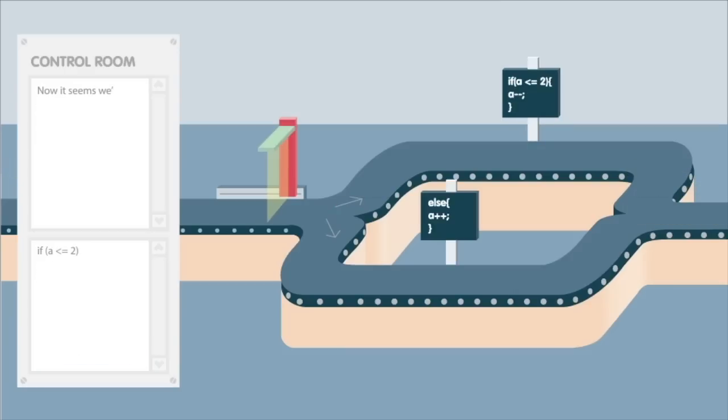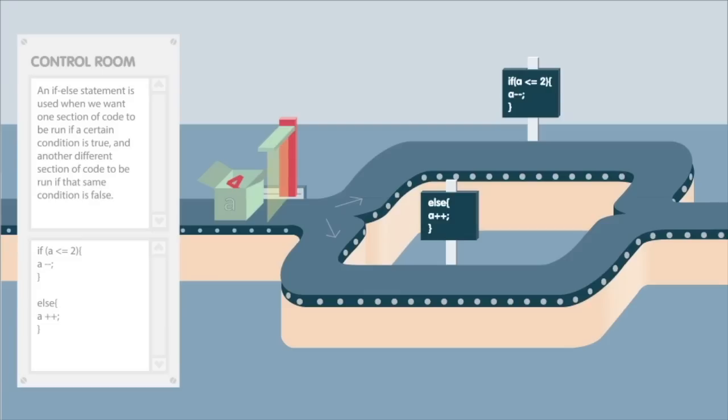Now it seems we've come to another split in the conveyor belt. This time, there is extra code on both tracks. This is an if-else statement. An if-else statement is used when we want one section of code to be run if a certain condition is true and another different section of code to be run if that same condition is false.